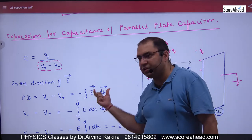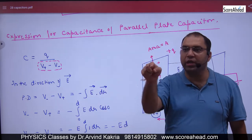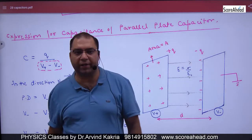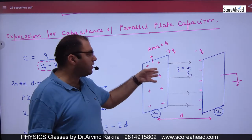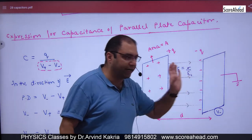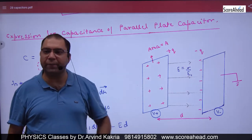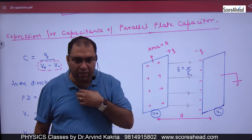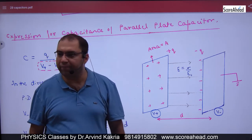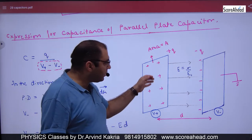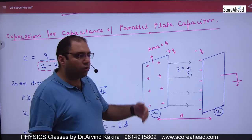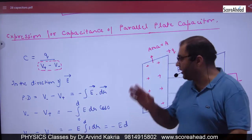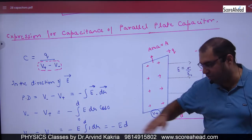Using this definition of potential difference, I need the angle between the E vector and the dr vector. The electric field is always directed from positive to negative. The direction of dr depends on my chosen direction of movement. If I am going from this plate to that plate, dr will be in that direction. If I am coming from the other side, dr will be in the opposite direction.